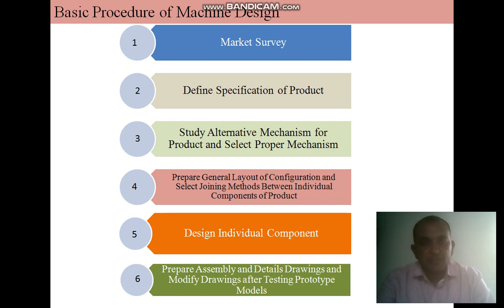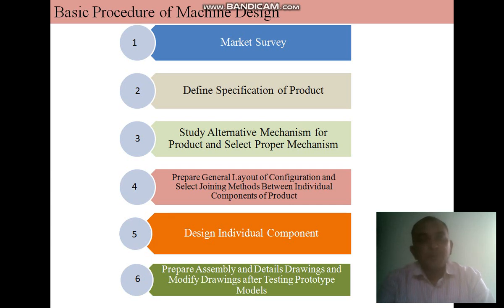The last step in machine design is to prepare assembly and detail drawings, and modify the drawings after testing a prototype model. In this stage, the designer prepares drawings of the assembly and individual components specifying material, dimensions, tolerances, surface finish grade, and machining symbols. The designer also prepares two separate lists: standard components to be purchased from the market, and specialty components to be machined in the factory. A prototype model is prepared and fully tested before finalizing the assembly drawing.